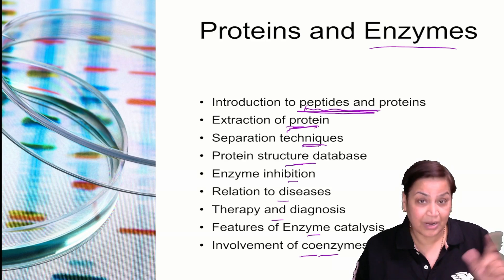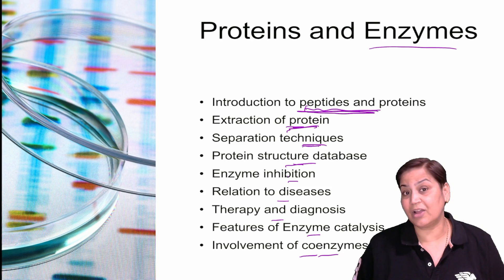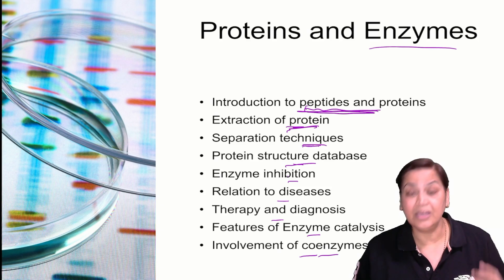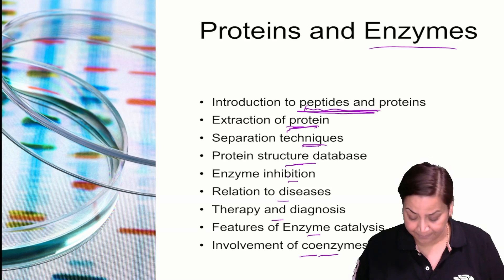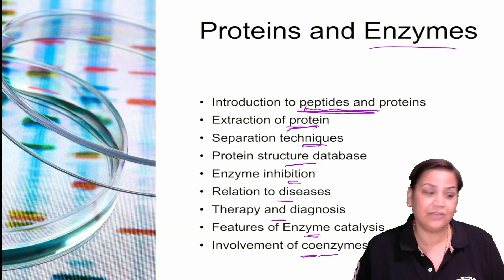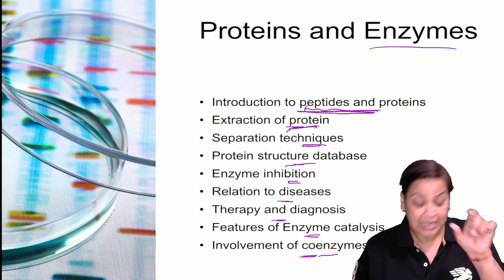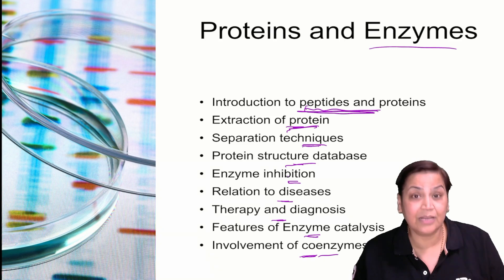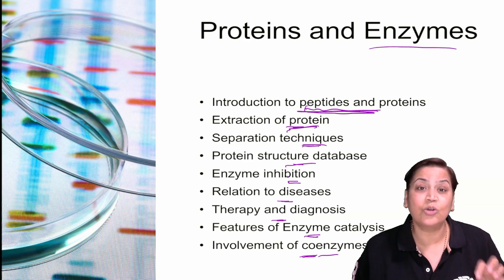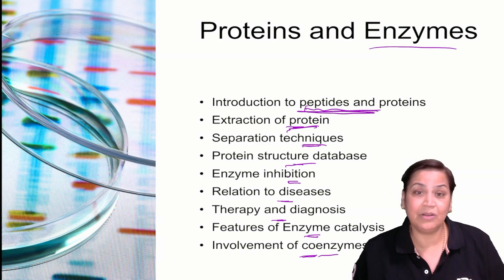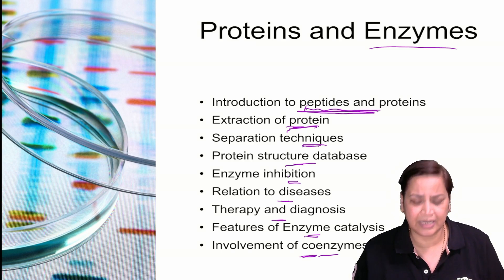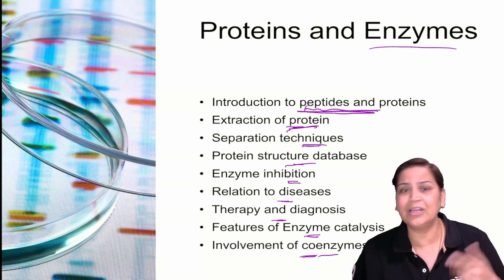Then protein structure - primary, secondary, tertiary - and if we want to study the tertiary structure, we should know the difference between X-ray crystallography and nuclear magnetic resonance (NMR). Then enzyme inhibition, relationship with diseases, therapy and diagnosis, features of enzyme catalysis and involvement of coenzymes. Coenzymes are very important. I will be taking classes on a regular basis so you will have an idea of the core areas to focus on. For coenzymes, I will give you the name of the reaction and the coenzyme for that.